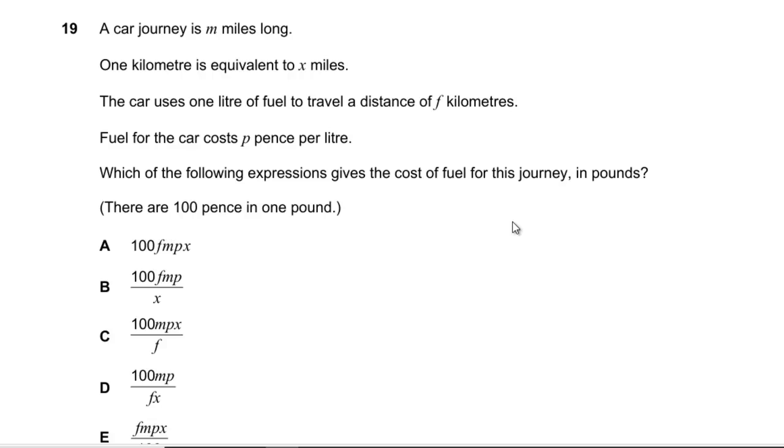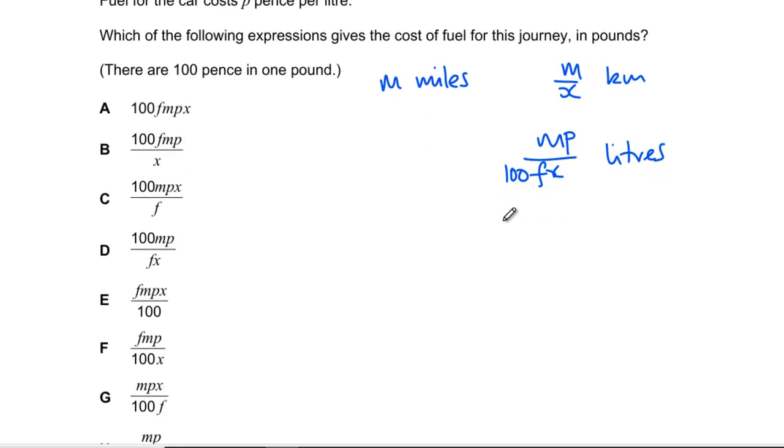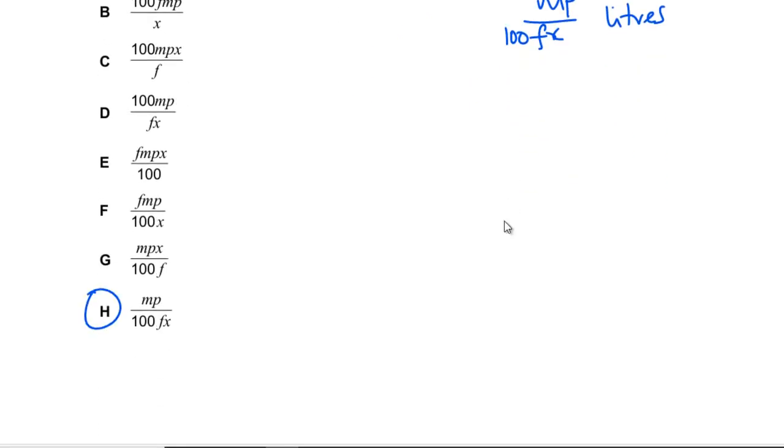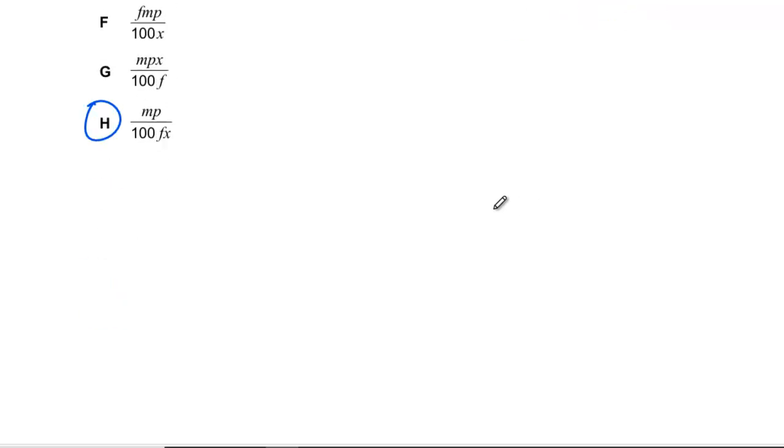Question 19: Car journey is m miles long, one kilometer is x miles, we get one liter of fuel to go f kilometers, and it's p pence per liter. In pounds, what's the cost? If we're doing m miles, that is m/x kilometers. We need one liter to go f kilometers, so one kilometer is 1/f liters. So we've got m/(fx) liters. Then we've got p pence per liter, so we need to multiply by p and divide by 100 to get pounds. mp/(100fx), which is the last one, E.